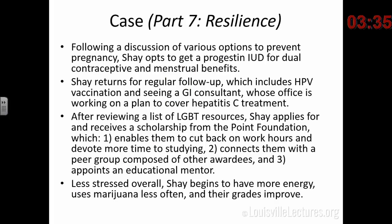This is what is happening with Shea now. Following a discussion of options to prevent pregnancy, Shea opted for a progestin IUD as dual contraceptive and for the menstrual benefit — and as it turned out, it eliminated menstrual flow, which Shea preferred. Shea returned for regular follow-up including an HPV vaccine series and a GI consultant working on covering hepatitis C treatment. After reviewing a list of LGBT resources, Shea applied for and received a scholarship from the Point Foundation, which gives money to LGBTQ individuals for educational purposes. This enabled them to cut back on work, devote more time to studying, connect with a peer group and educational mentor. Less stressed overall, Shea began using marijuana far less often and their grades improved.